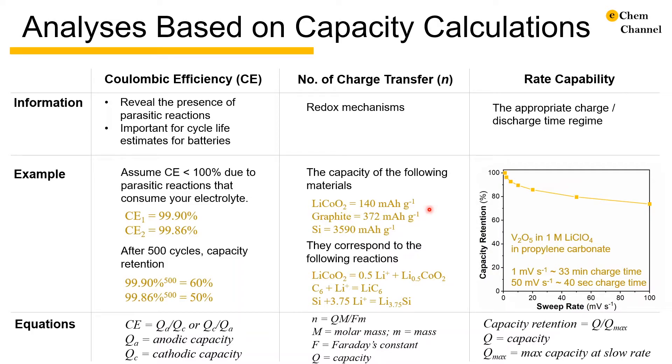In graphite and silicon, their theoretical capacities are 372 and 3590 mAh per gram respectively. They are calculated based on the assumptions that 1 lithium occupies a hexagon of carbon and 15 lithium ions react with 4 silicon atoms.